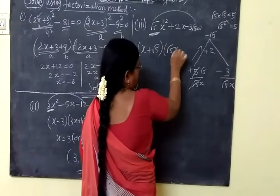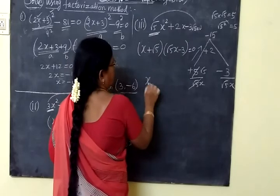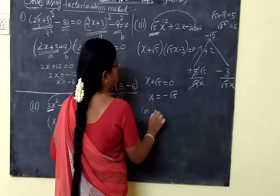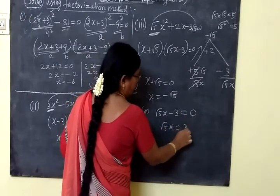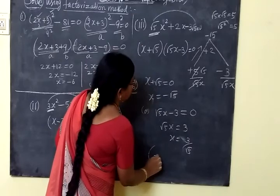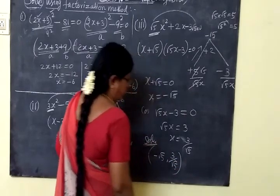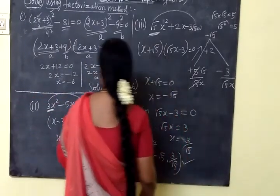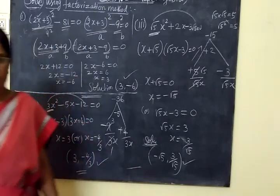x plus root 5, root 5x minus 3 equal to 0. So either first one equal to 0 or second one equal to 0. So x plus root 5 equal to 0. So x equal to minus root 5. Or root 5x minus 3 equal to 0. So root 5x equal to 3. So x is equal to 3 by root 5. Therefore the solution is minus root 5 comma 3 by root 5. Now we check the answer. The answer is minus root 5, 3 by root 5. All these are two more questions only. And very important questions and easy also. Thank you.